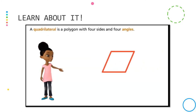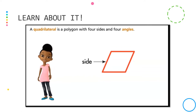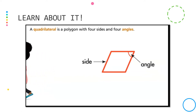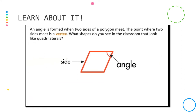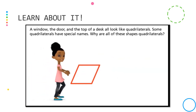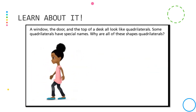A quadrilateral is a polygon with four sides and four angles. An angle is formed when two sides of a polygon meet. The point where two sides meet is a vertex. Think about the shapes you see in your house or your neighborhood — a window, the door, and the top of a desk all look like quadrilaterals.